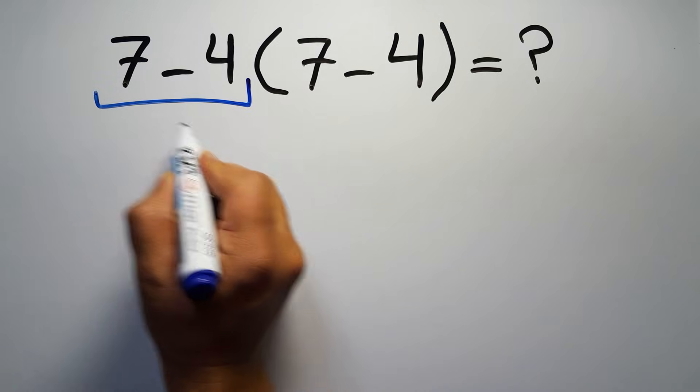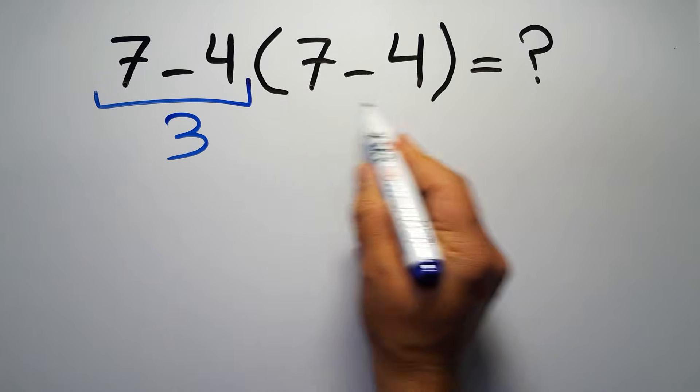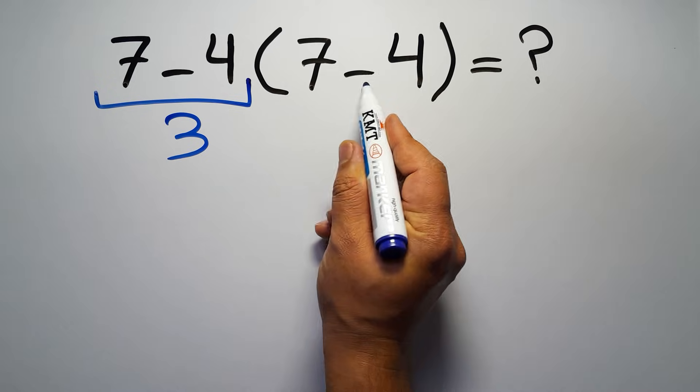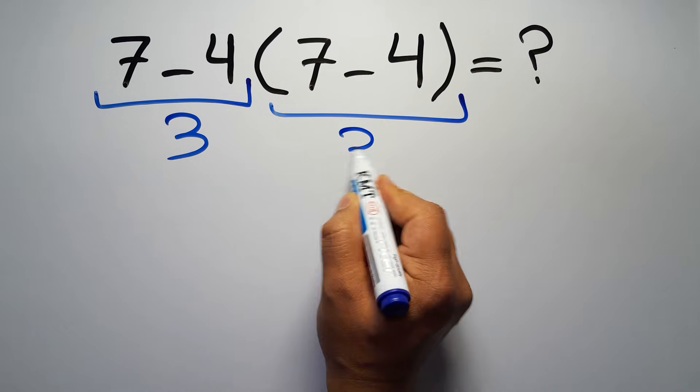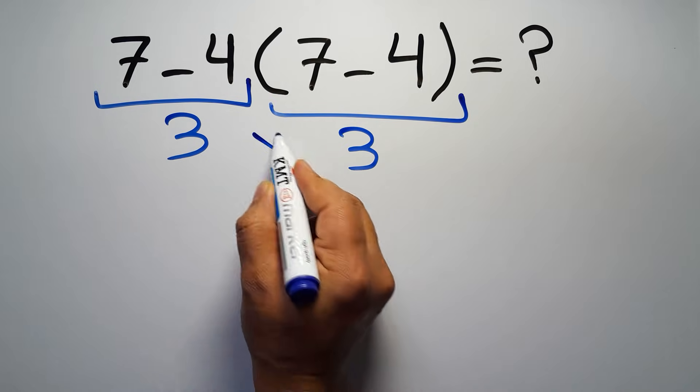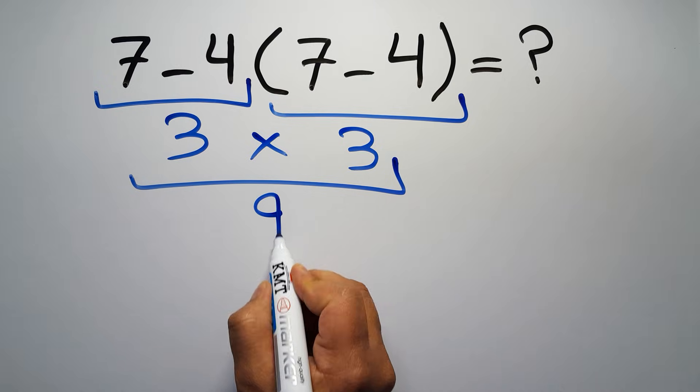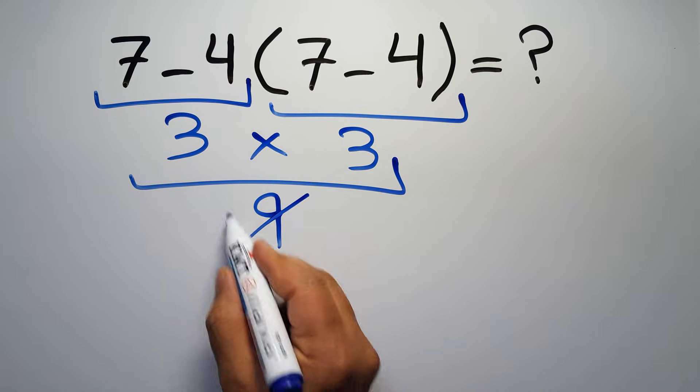7 minus 4 gives us 3, and again here inside this parentheses we have 7 minus 4, so 3 times 3, which gives us 9, but this answer is not correct,